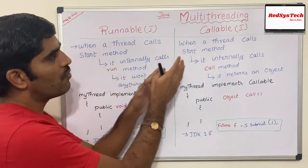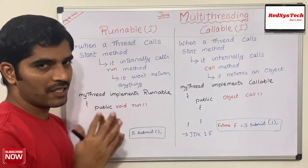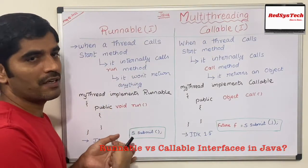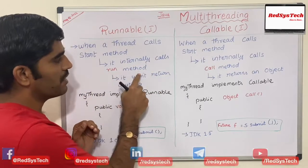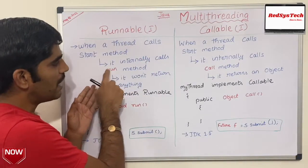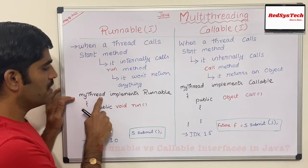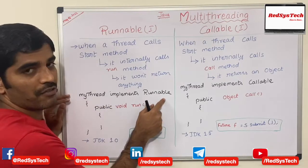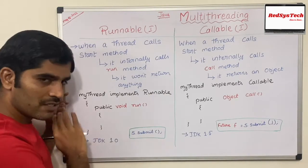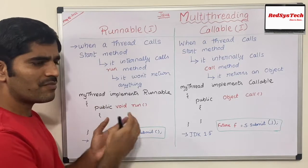Both Runnable and Callable interfaces are created by the Java development team to achieve multi-threading. When a thread calls the start method — for example, t.start() — it internally calls the run method if your class implements Runnable. The syntax of the run method is: public void run(). It does not return anything — it simply runs. So if your requirement is that you don't need to capture any result after the job completes, you can go for the Runnable interface.